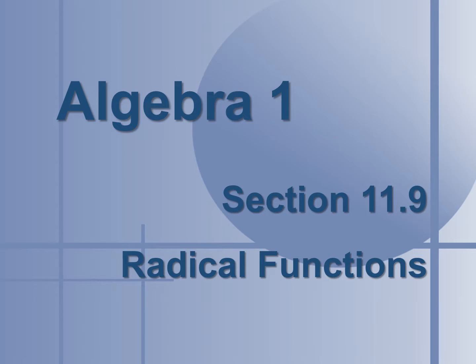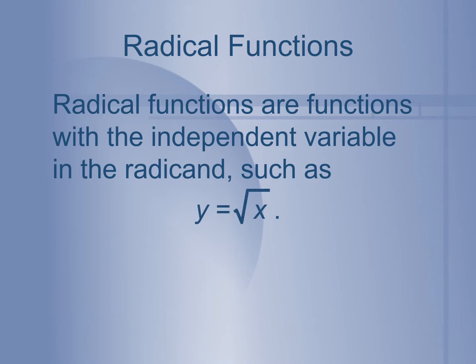We're going to look at radical functions, their graphs, and some properties of the radical function graphs, including their translations. A radical function is a function where the independent variable is in the radicand. So you have y equals, and your x must be inside the radicand. Here we have y equals the square root of x, which is what we call the parent function for radical functions.